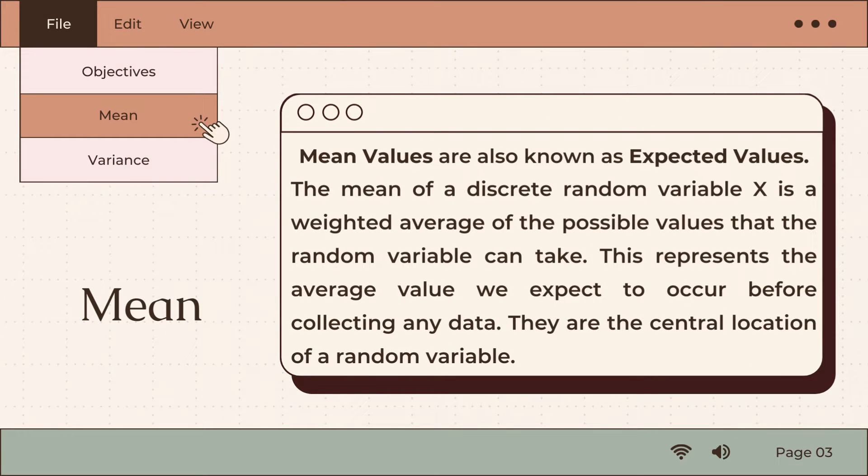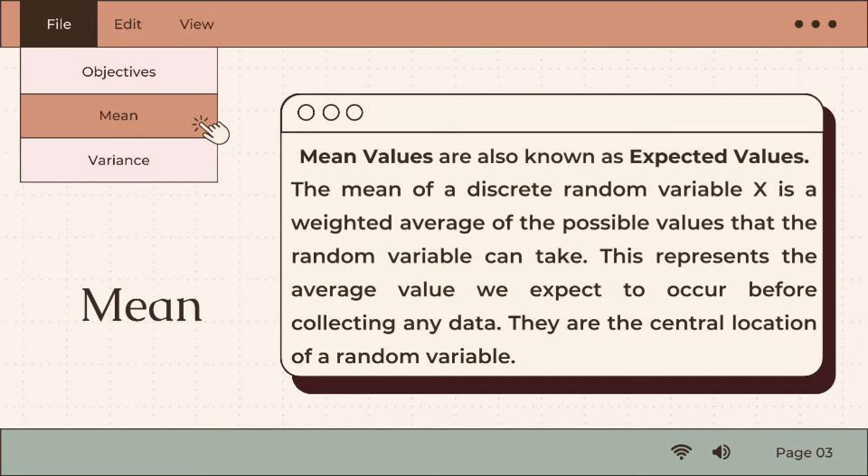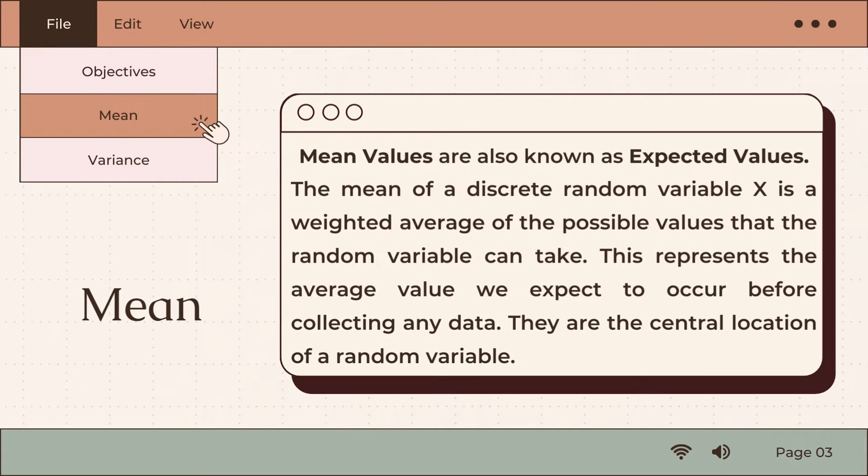Mean values are also known as expected values. The mean of a discrete random variable x is a weighted average of the possible values that the random variable can take. This represents the average value we expect to occur before collecting any data. They are the central location of a random variable.